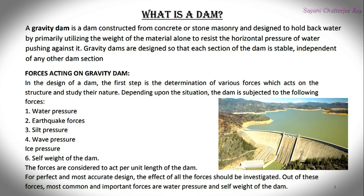Gravity dams are generally constructed with either masonry or concrete. Nowadays, concrete gravity dams are more popular because they can be easily constructed on any dam site having proper natural foundations to bear the weight of the dam. Gravity dams are usually straight in plan, but slightly curved dams in plan are also constructed in favourable conditions. This dam can be constructed up to greater heights.